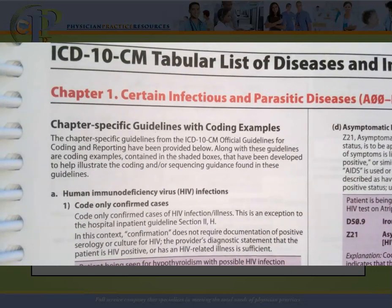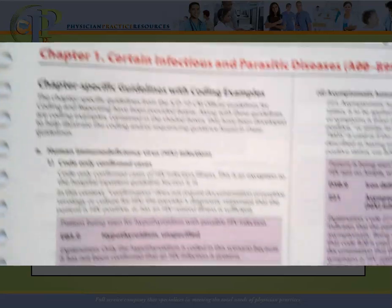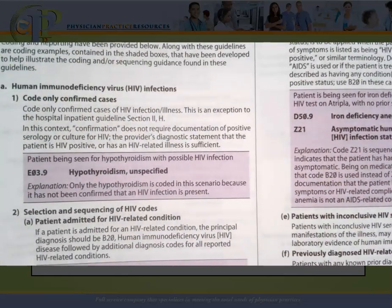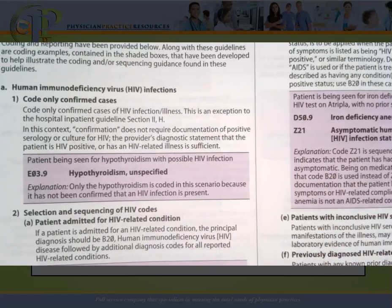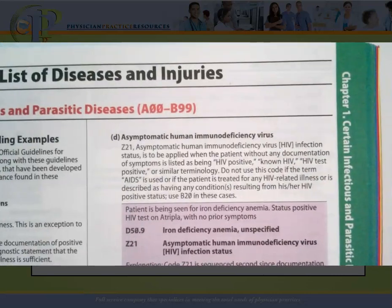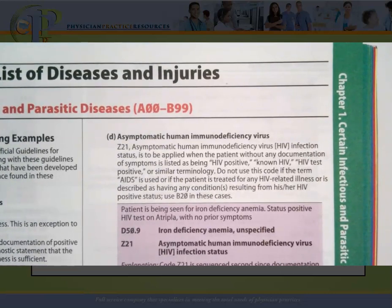Let's go back to our manual and start with chapter one, which is certain infectious and parasitic diseases — codes A00 through B99 — and they start off with guidelines. In addition to having guidelines, there are also purple boxes with explanation of those guidelines. They don't have explanations for all guidelines, but for some of the more common ones they do.